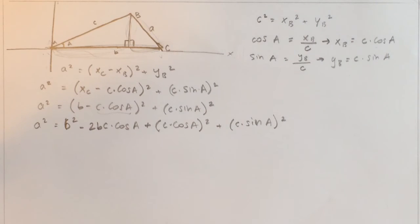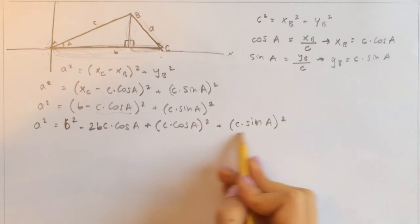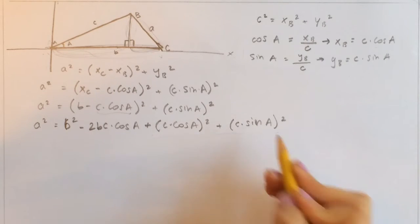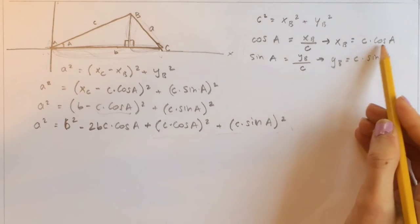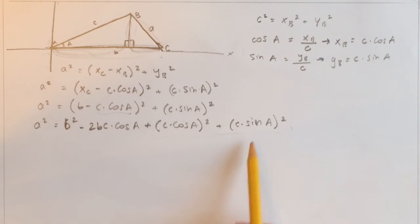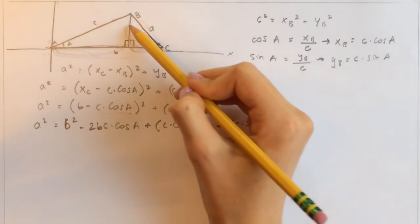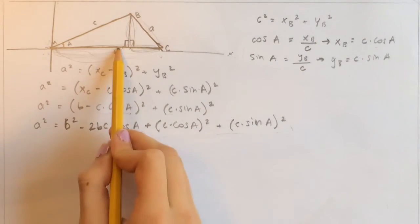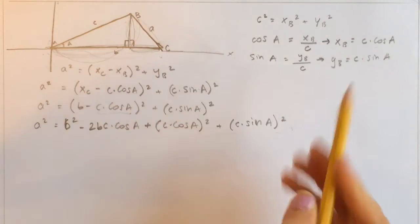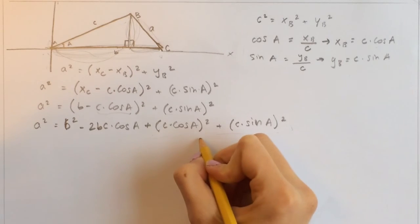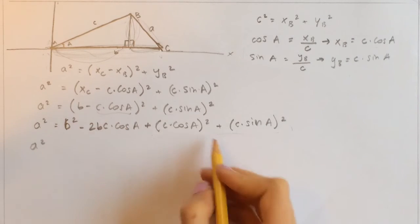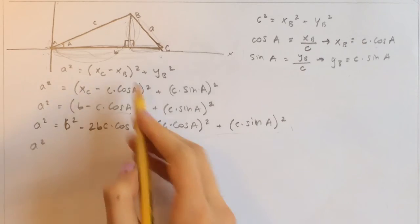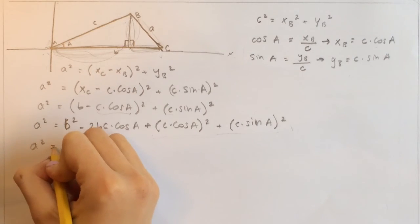Now, looking at these two terms next to each other: we know that c times cosine of A is x of B, and c times sine of A is y of B. So x of B squared plus y of B squared equals c squared by the Pythagorean theorem. So we can replace that whole term with c squared.